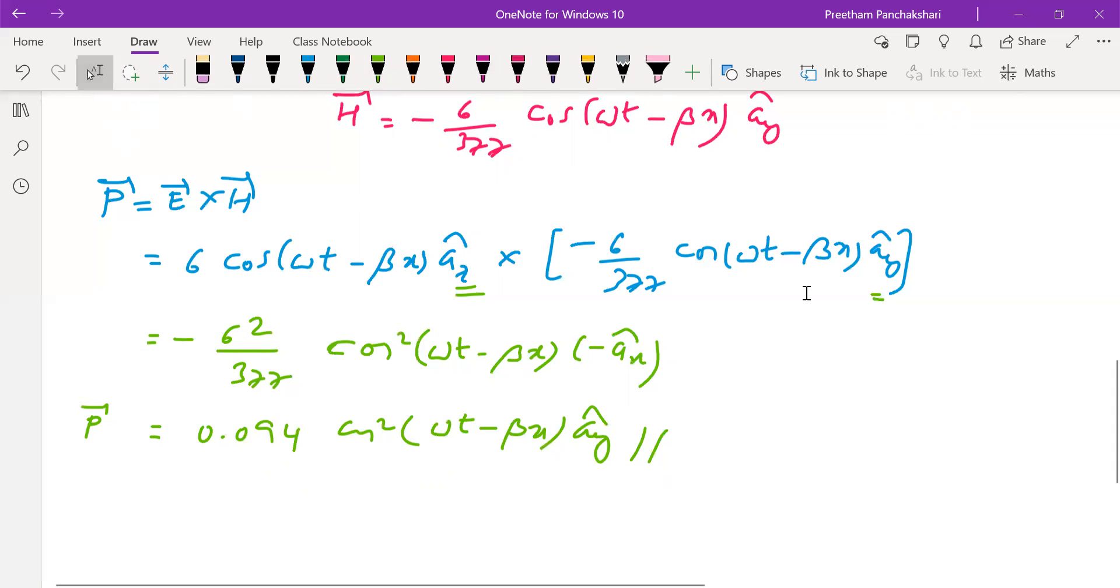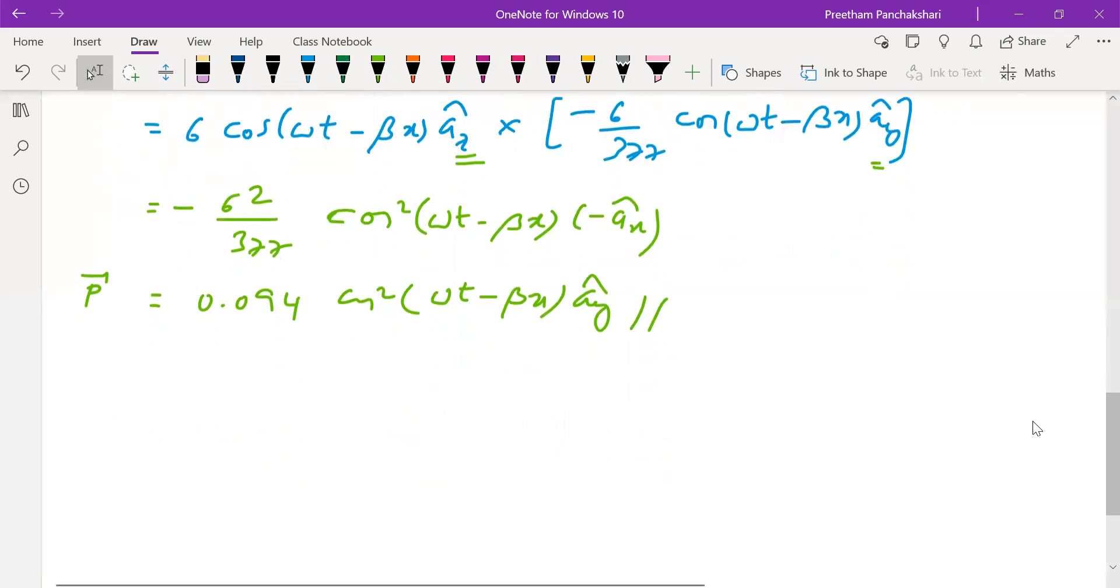We go for average Poynting vector. Part two: P_average is given by many formulae.